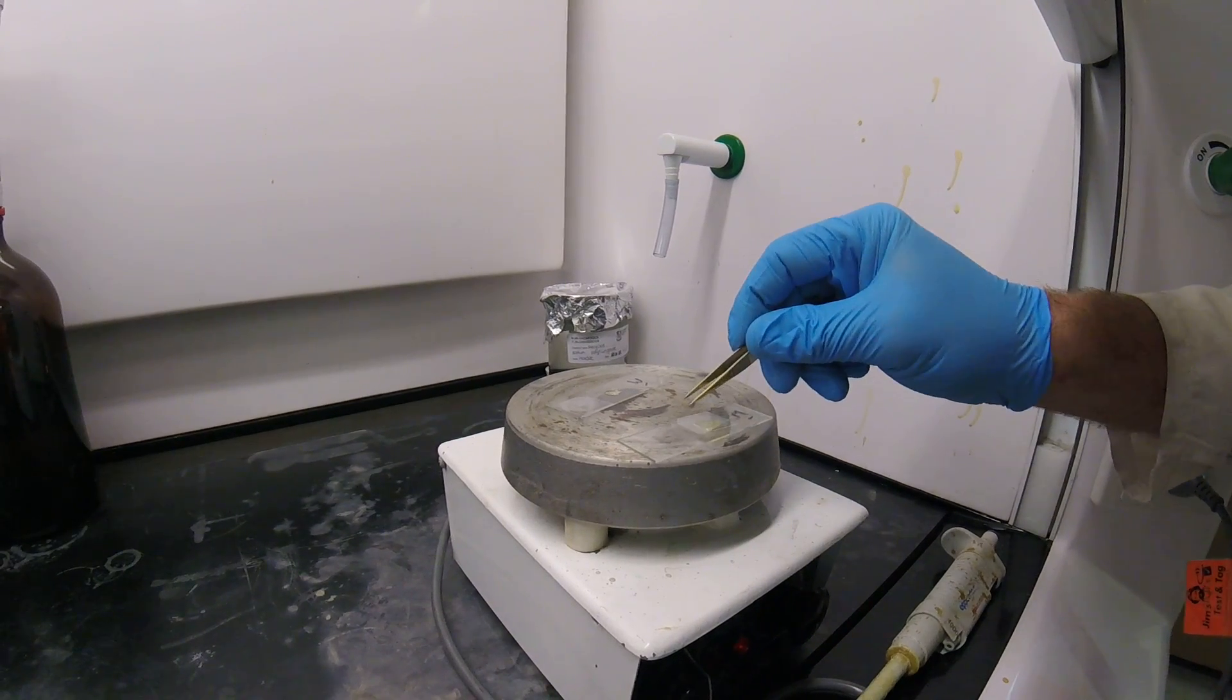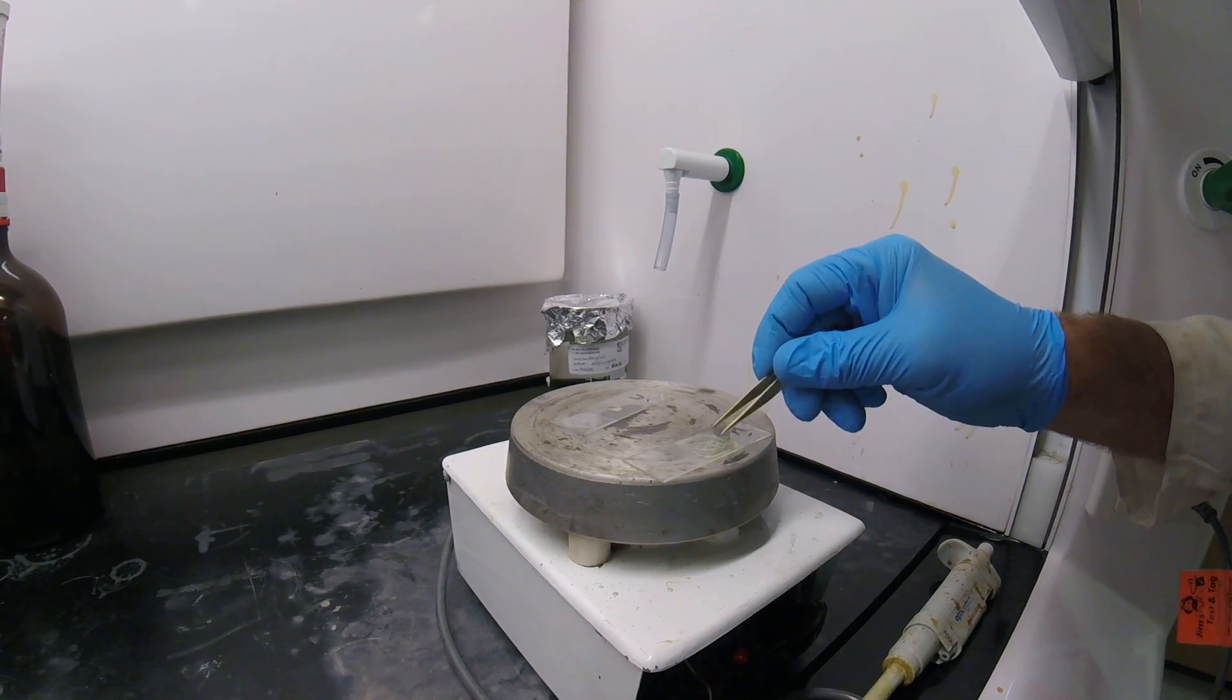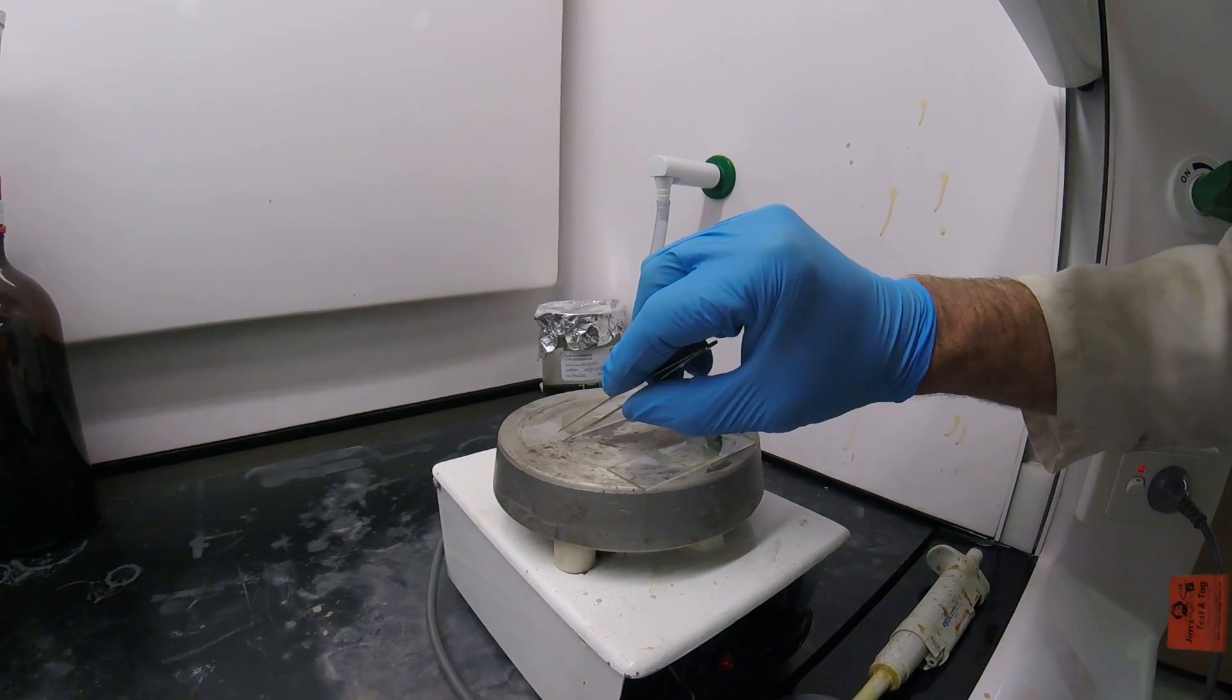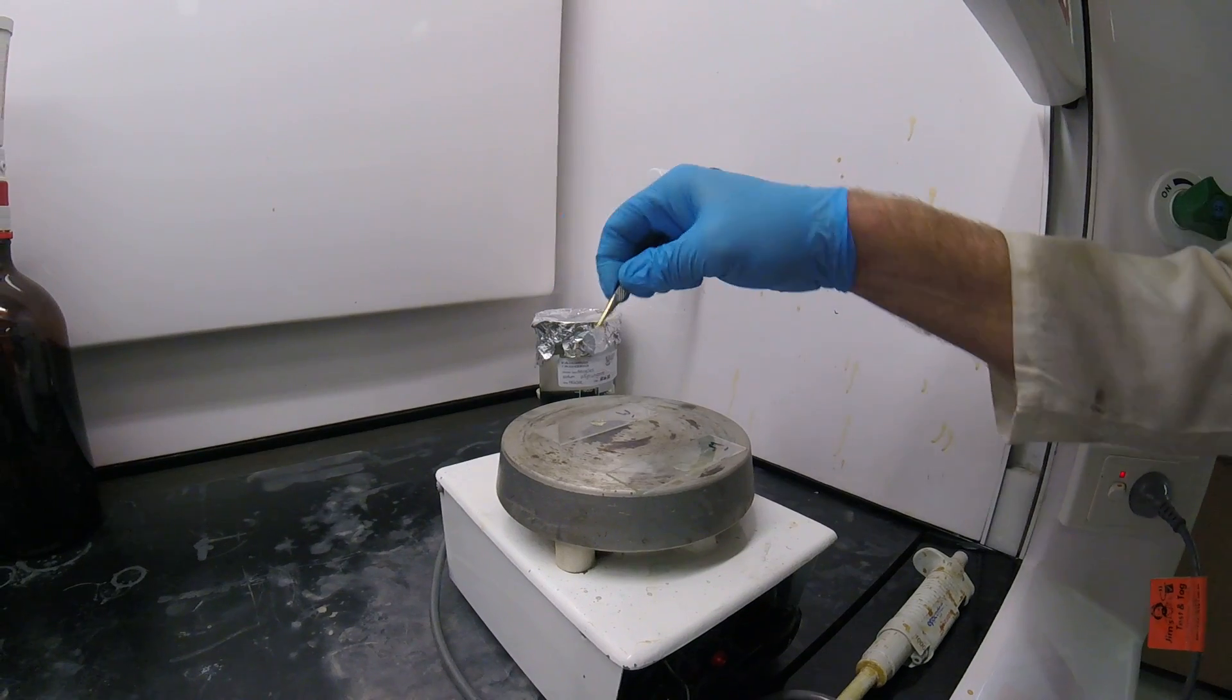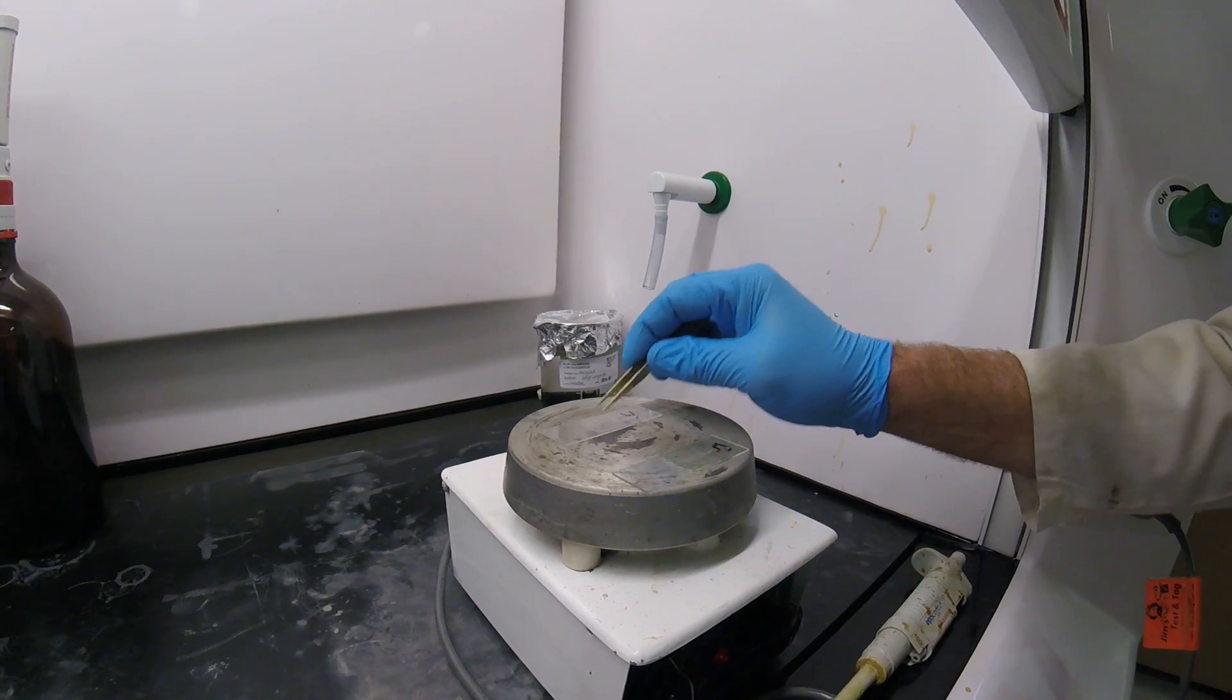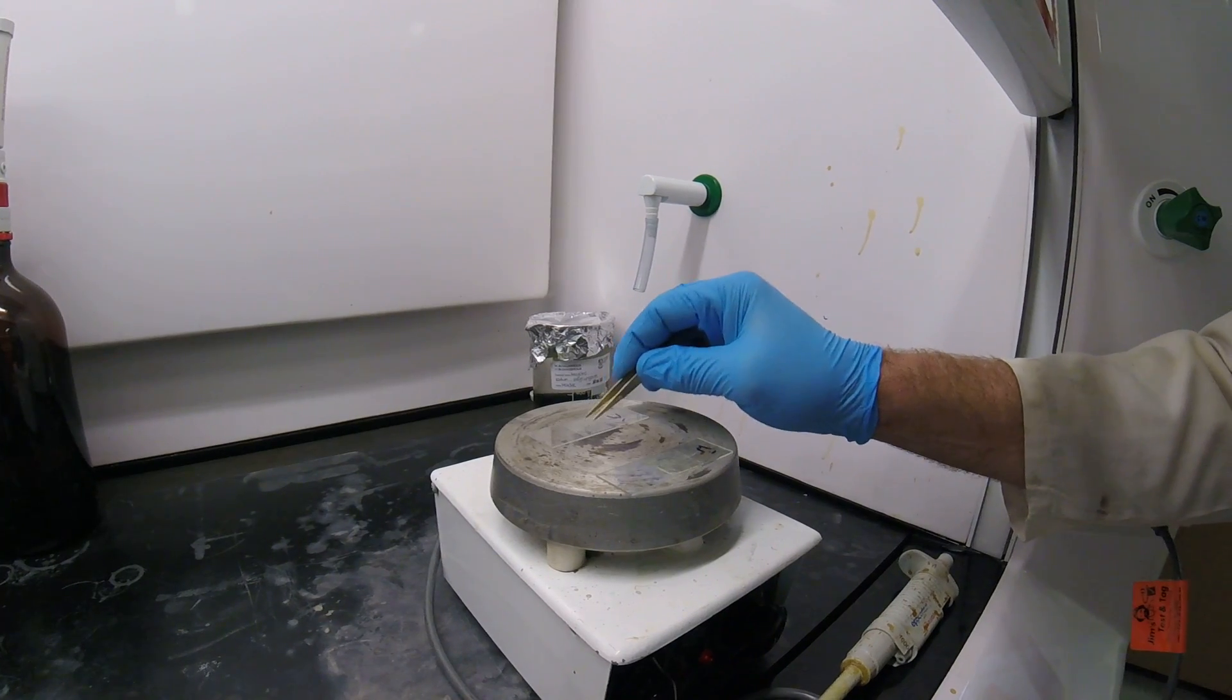And then we can see the toluene start to bubble off here and we'll just leave that sit there for a minute. Then we'll press this down and push all the bubbles out. And importantly we'll push the cover slip down as hard as we can so that the diatom valves get pushed down and as much as possible get oriented in valve view so that they're easily identifiable rather than being on their side in girdle view.